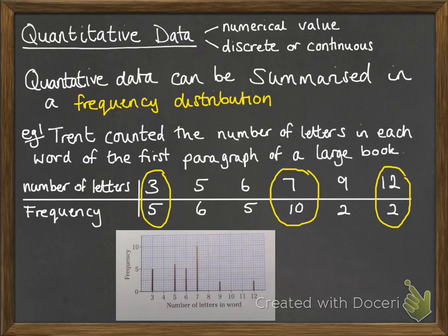This can also be shown in a graph like this, where we've got vertical lines representing the frequency for how many words we have of each length. This is called a vertical line graph.